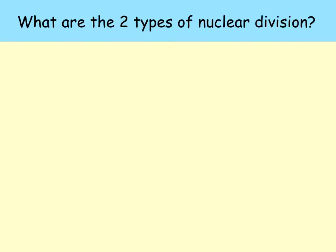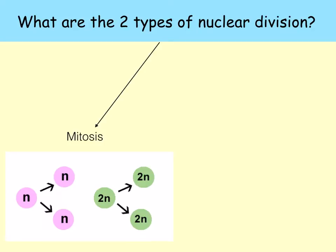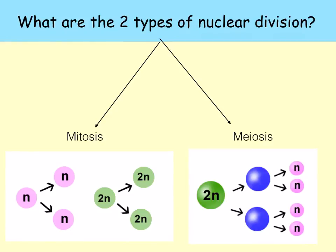Can you remember what the two types of nuclear division are? You've got mitosis, where two genetically identical daughter cells are produced and they contain the same number of chromosomes as their parent. And then meiosis, where the chromosome number has been halved, so we say that the daughter cells are haploid.